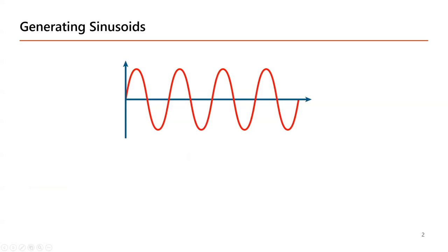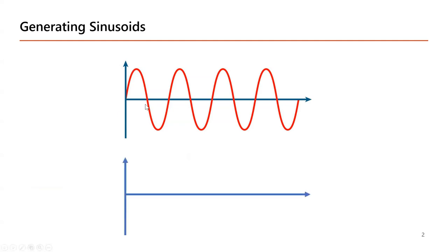Sine waves and cosine waves are analog in nature, and since FPGAs are devices for digital signal processing and defining digital circuits, we will not be able to generate an analog sine wave. So the approach we have to take is sampling — we take a continuous-valued sine wave, sample it at some fixed interval, and end up with a digital representation of the sine wave.